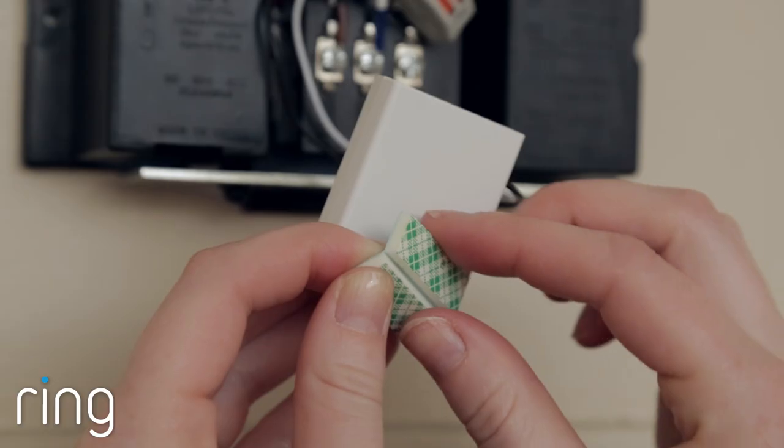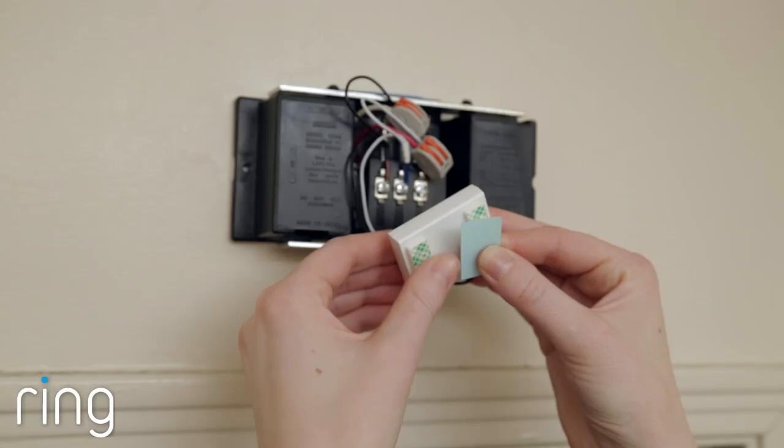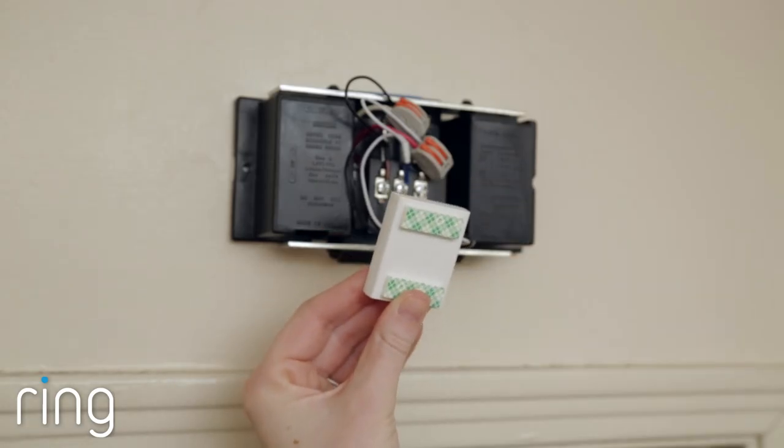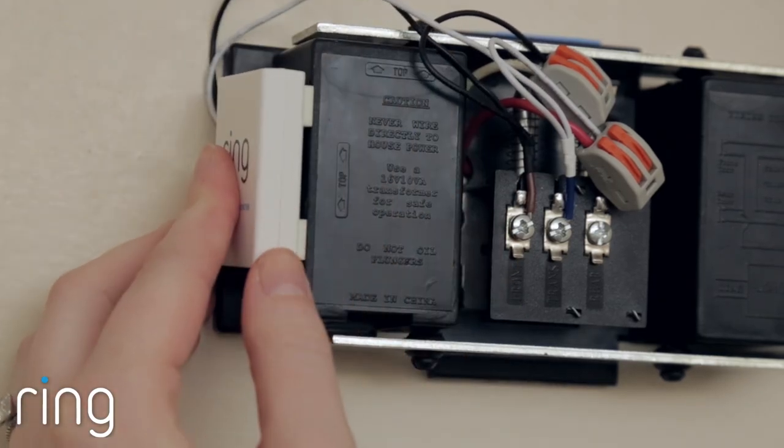The final step is to secure the Pro Power Kit. We've included some double-sided foam adhesive that you can use to secure the Pro Power Kit if necessary. The trick here is to put it anywhere it'll fit.